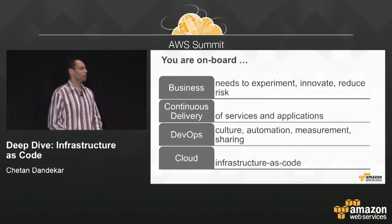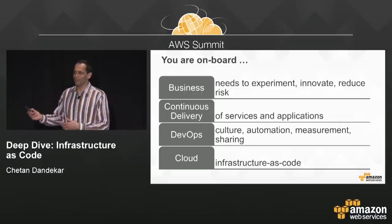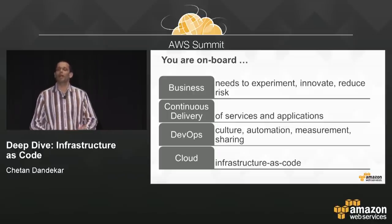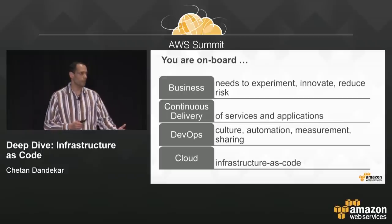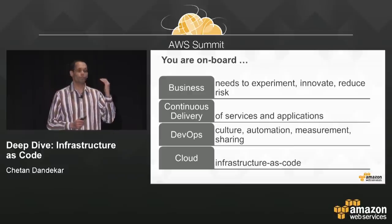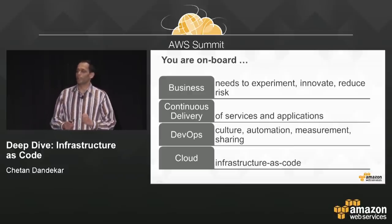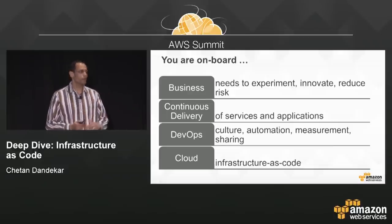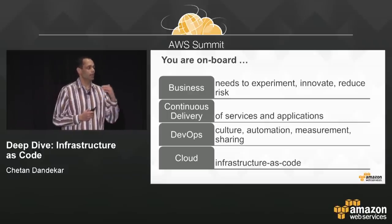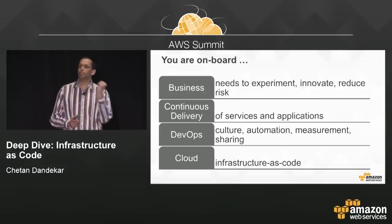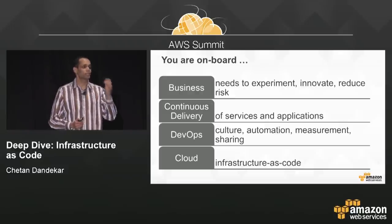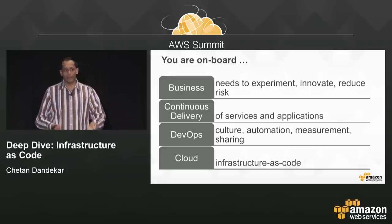You're attending an infrastructure as code session, so I assume you're already on board this train — likely in a business where you need to innovate fast and experiment fast to distinguish yourself from the competition. Innovating fast also means being able to fail fast and reduce the risk in failure so you don't lose the next opportunity. Continuous delivery and continuous integration enable that innovative agile business because you can push features out fast, double down quickly on what works, and course-correct quickly on what doesn't.